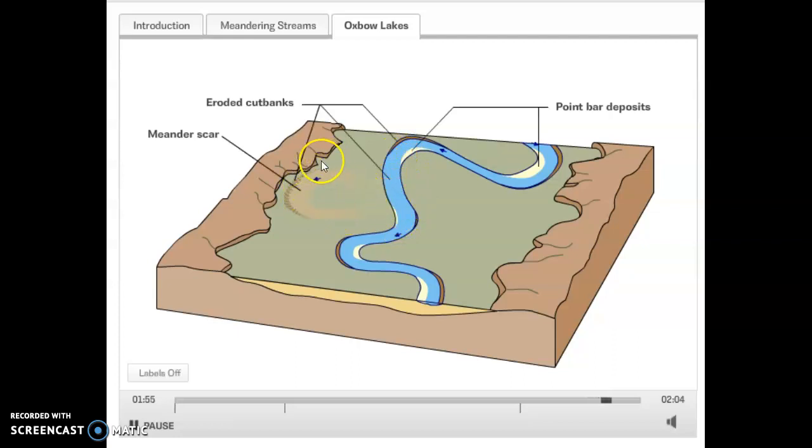That oxbow lake, then you have the meander scar that's left behind. So that gives you a nice overview of the different features that were formed by streams.